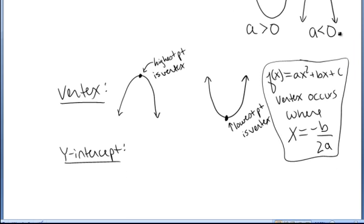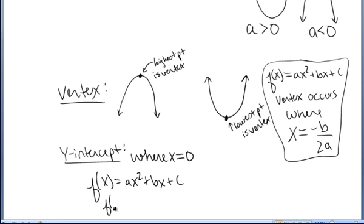Recall, y-intercepts always occur where the x value equals zero on any sort of graph. So in a quadratic function, since f of x equals ax squared plus bx plus c, if we let x be zero, we see that f of zero equals a times zero squared plus b times zero plus c.